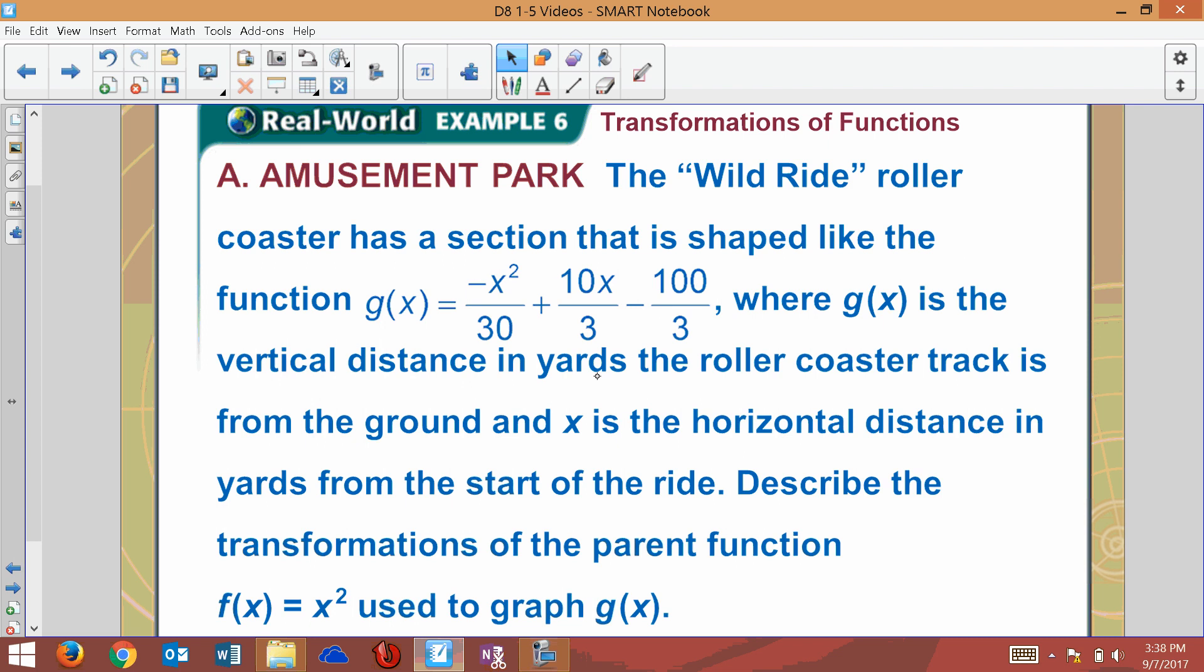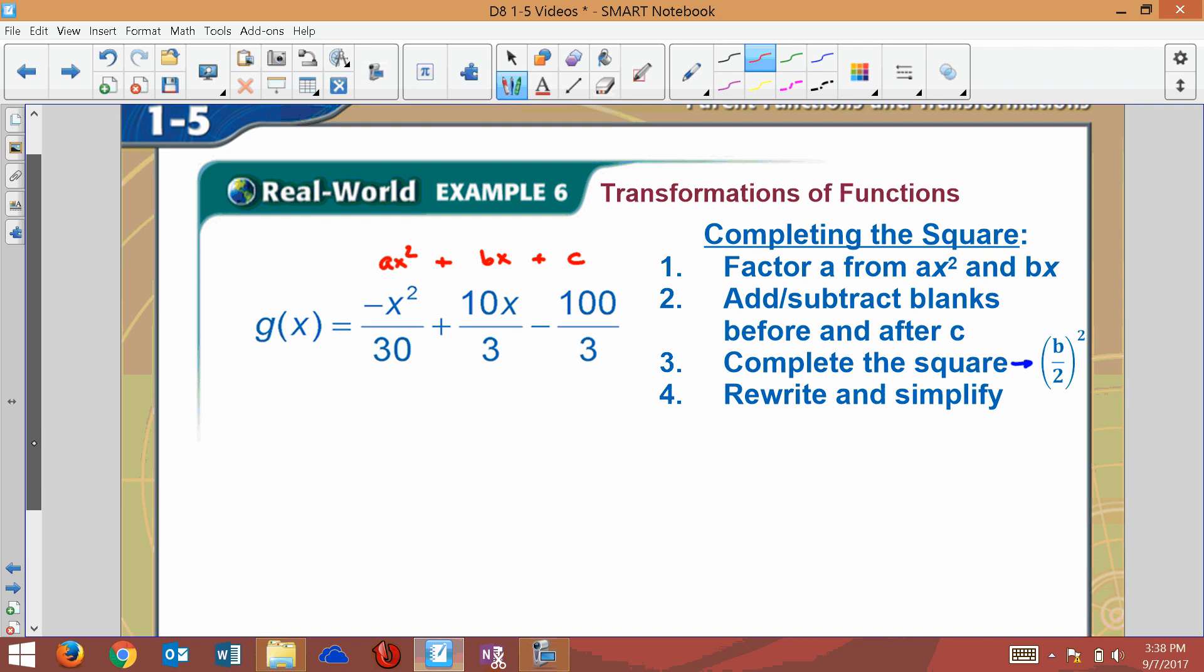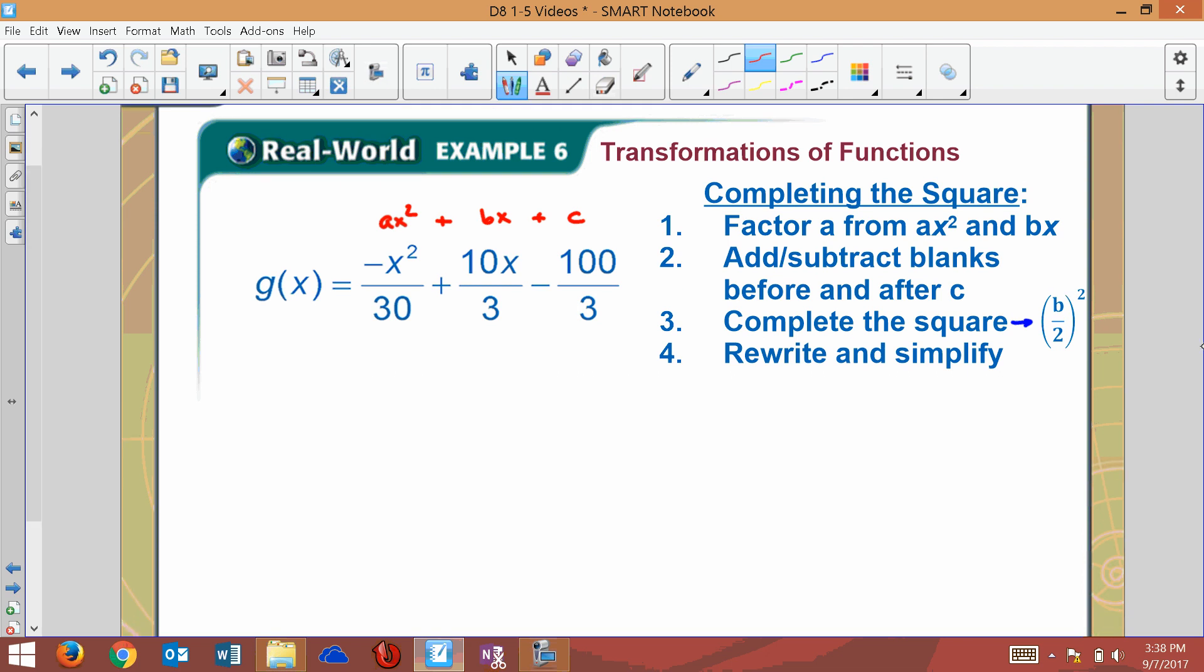This is in standard form ax squared plus bx plus c, so we need to change that. Here's what I've done - we're going to complete the square to get it out of that form into vertex form. As a reminder, this is our ax squared term, this is our bx, this is our c. We need to get it out of that form. Step number one: factor a from both ax squared and bx. Our a is negative one over 30, so that's what I'm going to factor out. Negative one over 30 is going to come out of this and it leaves me with x squared.